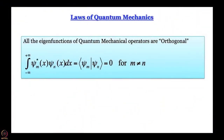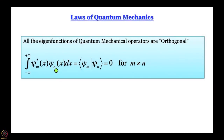The next postulate is that all eigenfunctions of quantum mechanical operators are orthogonal — more precisely, all eigenfunctions can be represented as linear combinations of mutually orthogonal functions. Orthogonality here means: take the complex conjugate of one function, multiply by the other, integrate over all space, and you get zero. In Dirac's bracket notation, this is written as ⟨ψₘ|ψₙ⟩ = ∫ψₘ*(x)ψₙ(x)dx = 0 when m ≠ n.